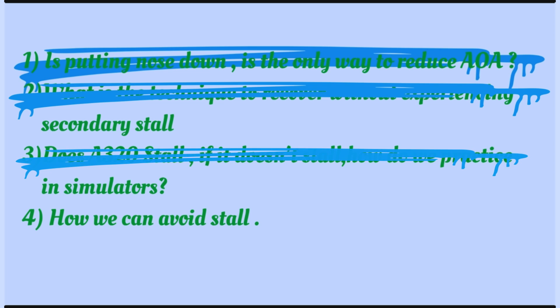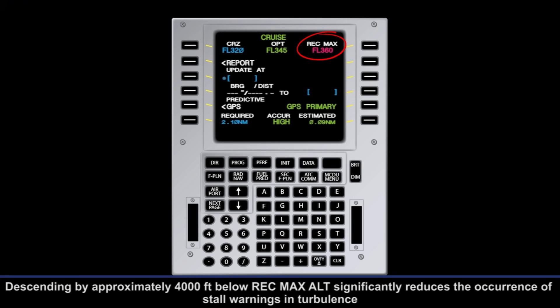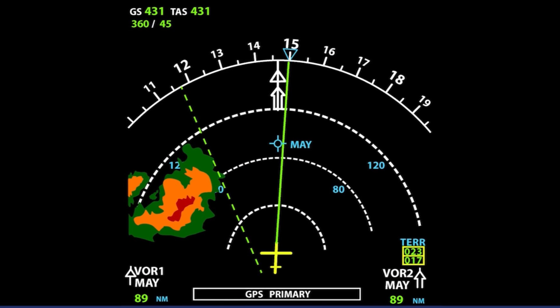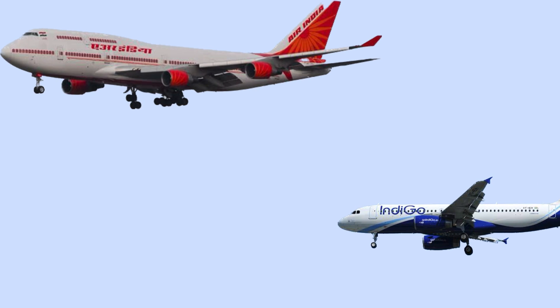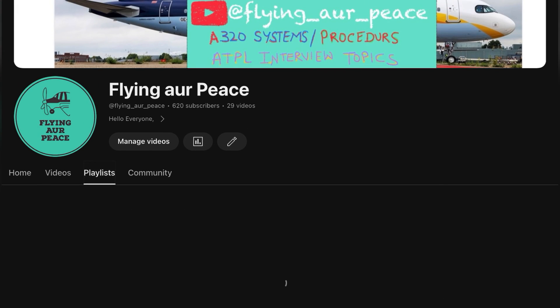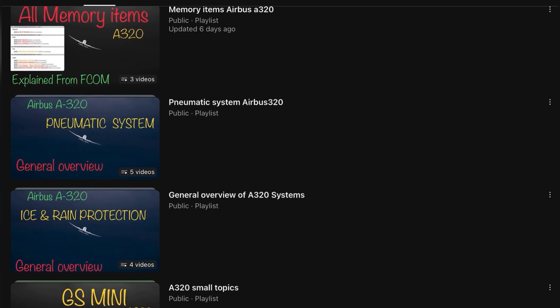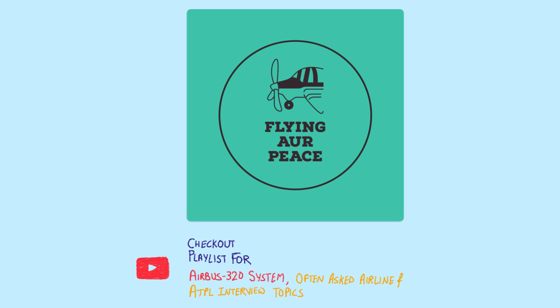How to avoid stall in real life: if you remain 4,000 feet below your recommended maximum altitude, that will significantly reduce the occurrence of stall warning in turbulence — tell me the reason in the comments. Second, avoid areas where turbulence may be encountered, such as thunderstorm cells. Also consider the impact of turbulence from aircraft above and ahead of you — any heavy aircraft above and ahead of you can get you in trouble. I hope all your doubts are clear. If you have questions, drop a comment. My name is Abhishek Sharma, channel name Flying All Peace — thanks!